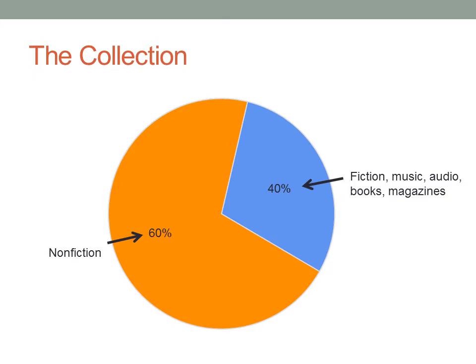Approximately 60% of the typical school library collection should be nonfiction materials that support the curriculum. There should also be materials for leisure and free reading that includes popular fiction, music, audio books, and magazines.